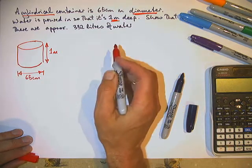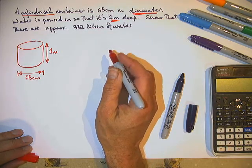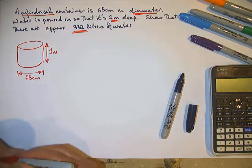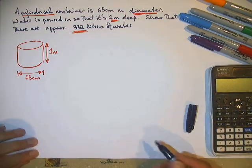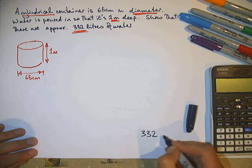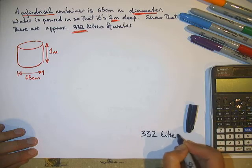And what's the question? Show that there are approximately 332 litres of water. So we want to end up with, the answer at the end needs to be 332 litres is what we're aiming for.